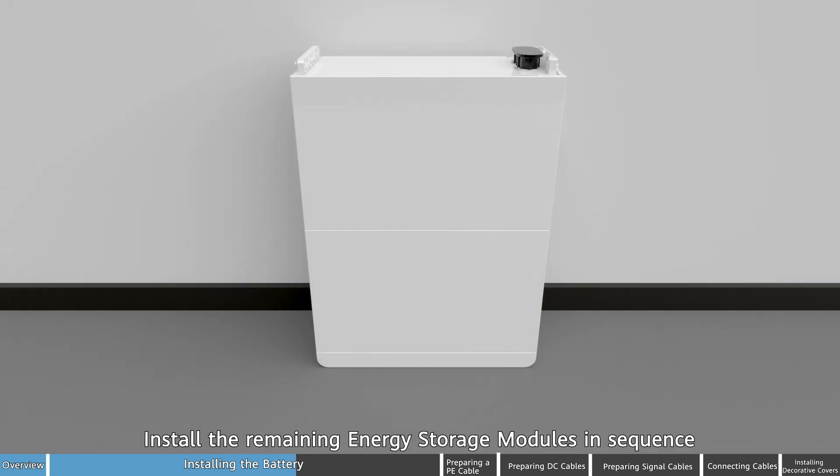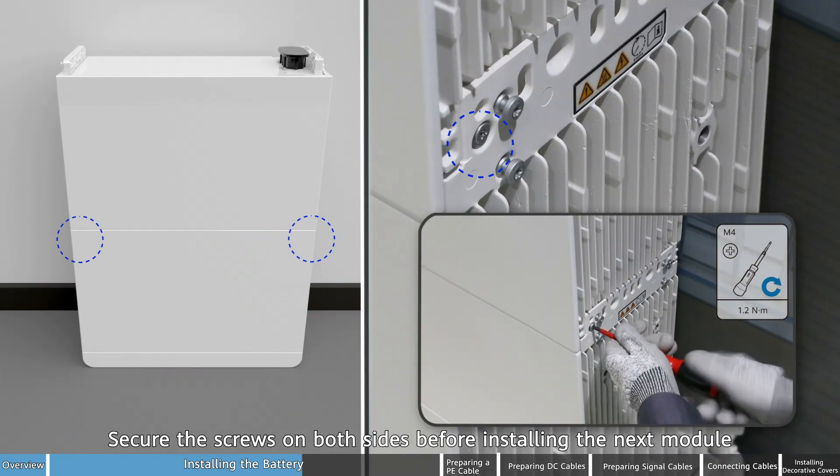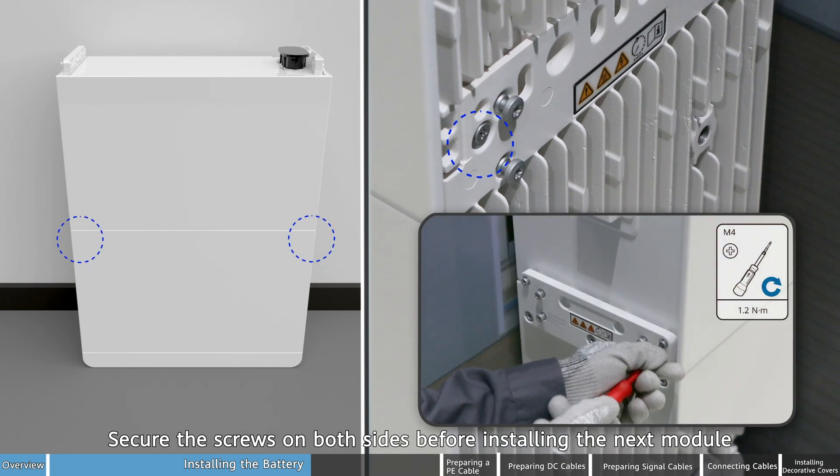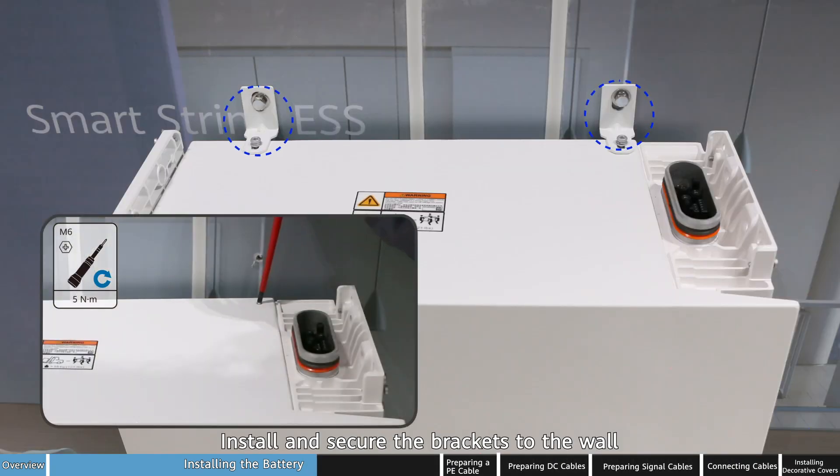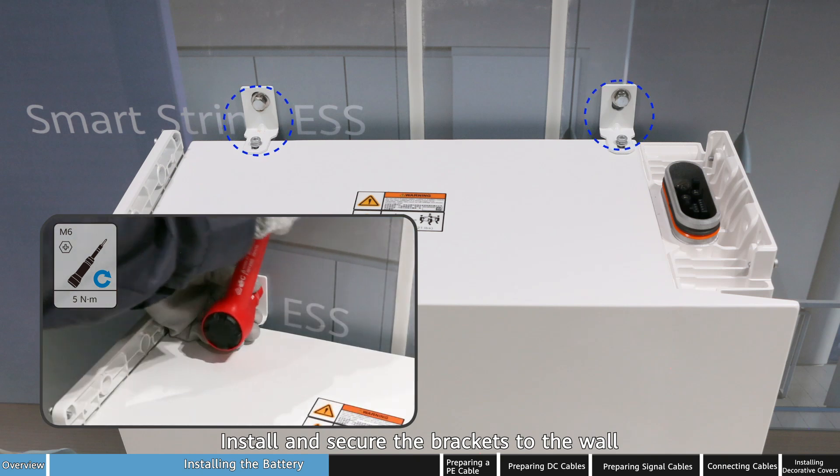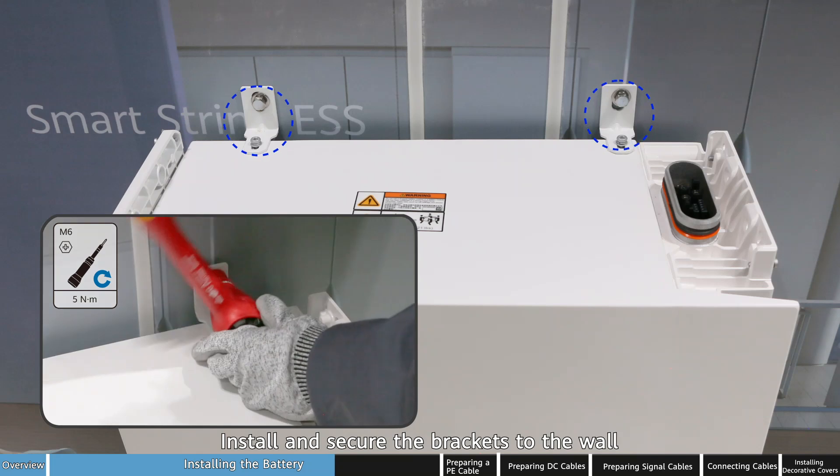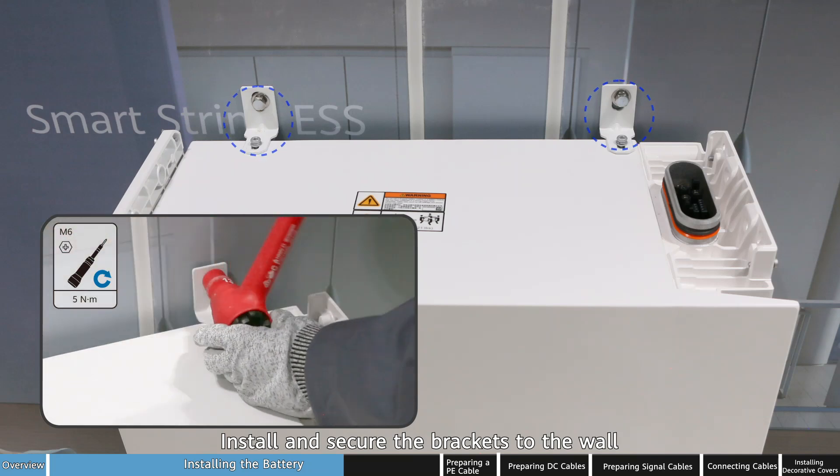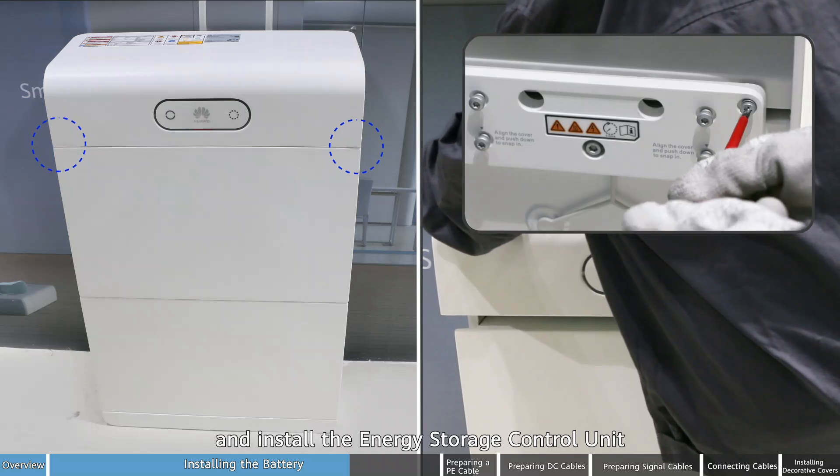Install the remaining energy storage modules in sequence. Secure the screws on both sides before installing the next module. Install and secure the brackets to the wall and install the energy storage control unit.